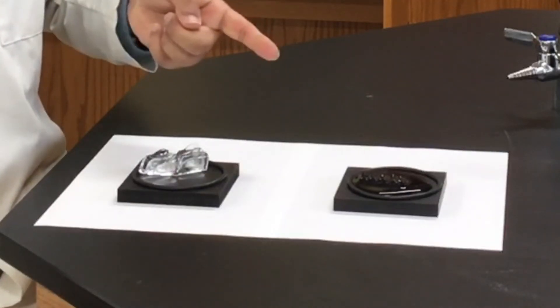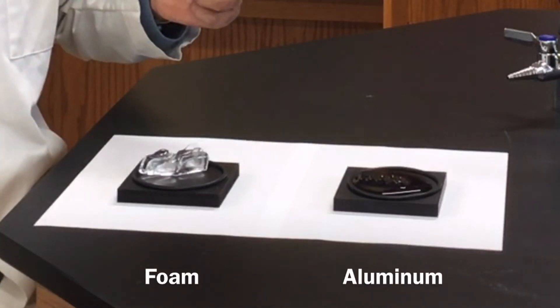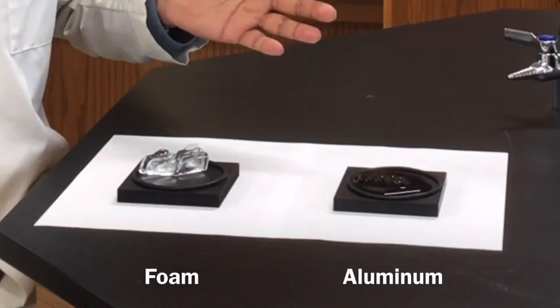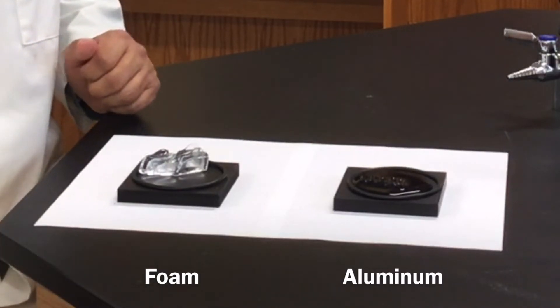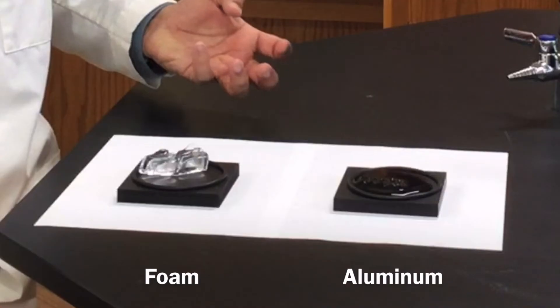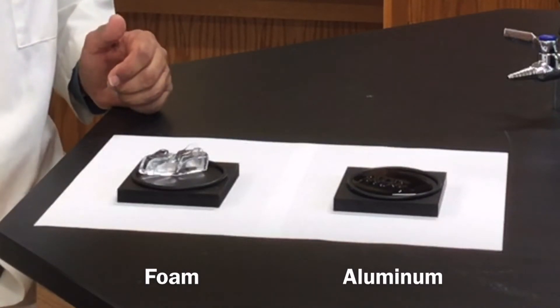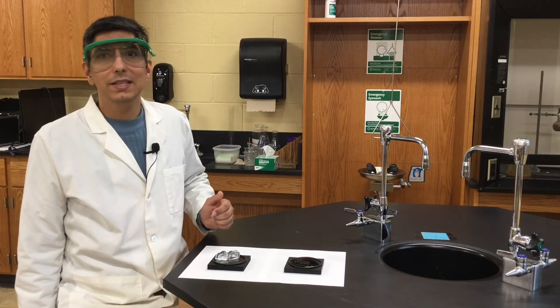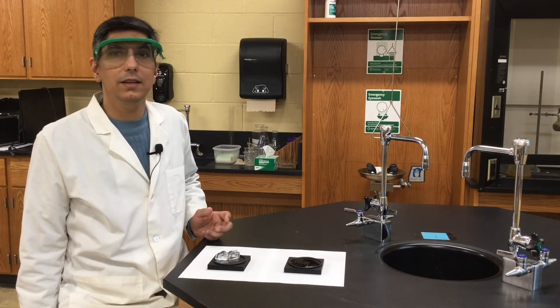The second block, on the other hand, is made of aluminum, which has a very low specific heat capacity. That means that it changes temperature very easily, and it's able to conduct lots of heat from the surroundings into the ice. As a result, the ice melts very quickly. So, we can say that low specific heat materials are generally heat conductors.